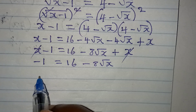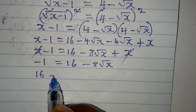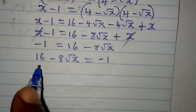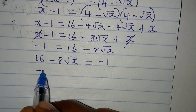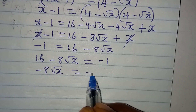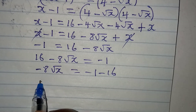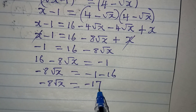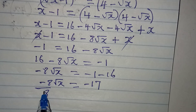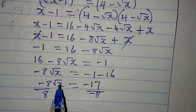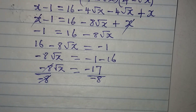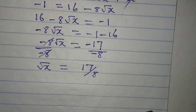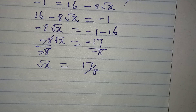Let's rearrange so that 16 minus 8 root x equals minus 1. Taking 16 to the other side gives minus 8 root x equals minus 1 minus 16, which is minus 17. Dividing both sides by minus 8, root x equals 17 over 8.